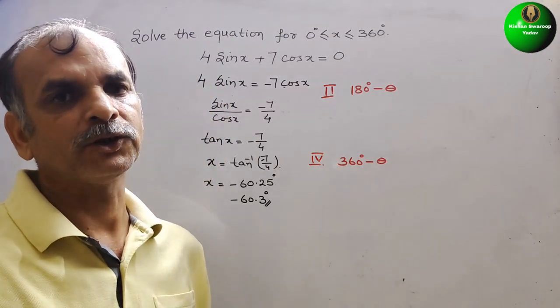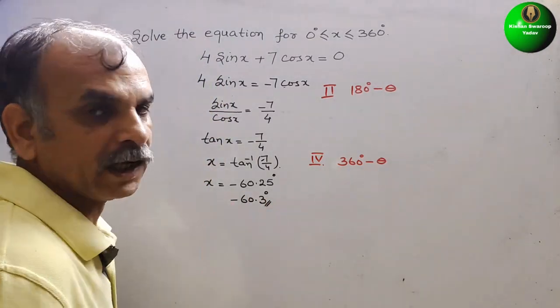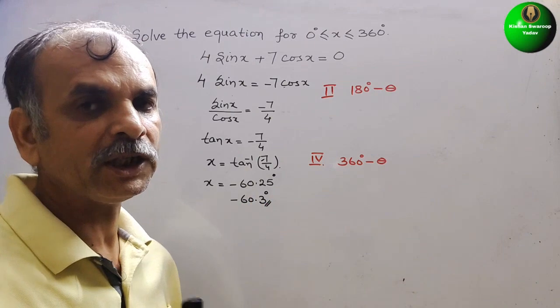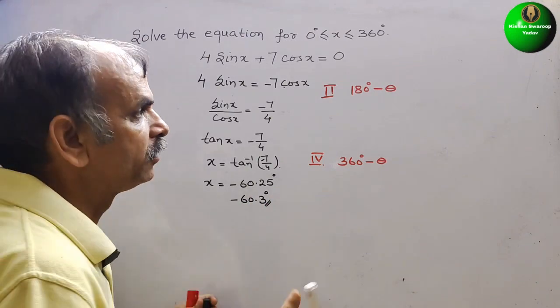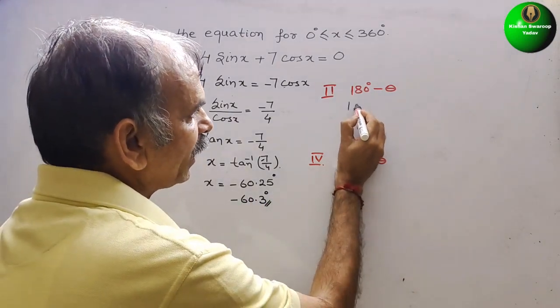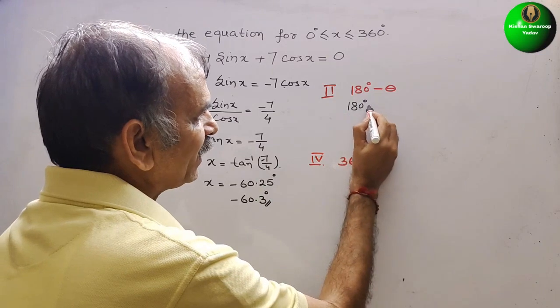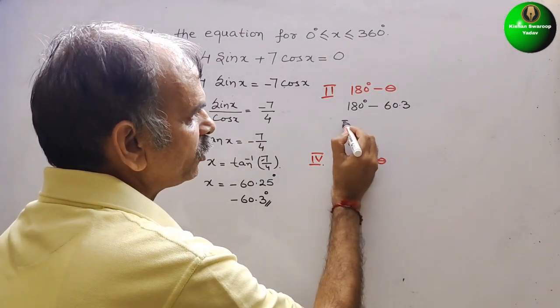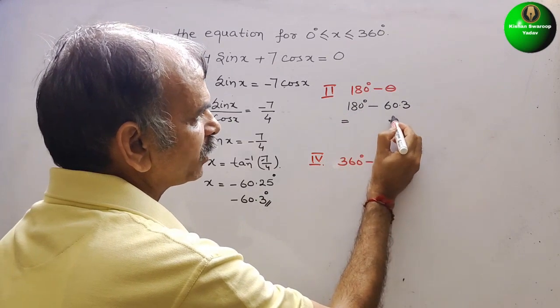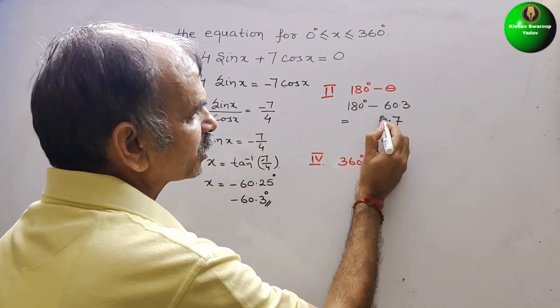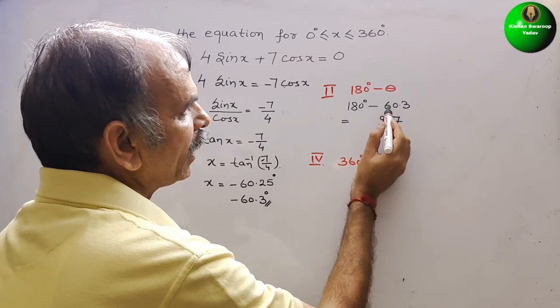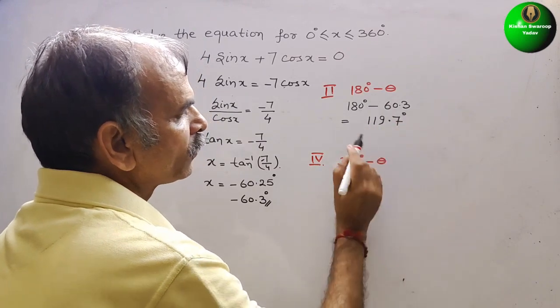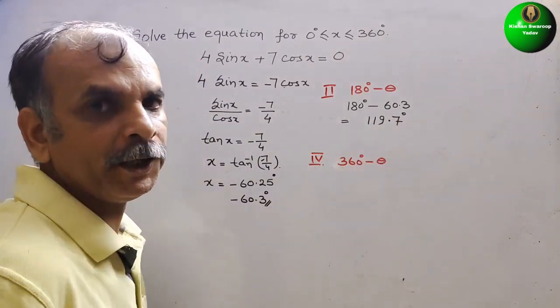So just substitute the values. So this is nothing but your theta. 60.3 is your theta. So now it will be 180 degrees minus 60.3. That is equal to, we can say, 0.7. Here comes 9, and this is 11. So 119.7 degrees.